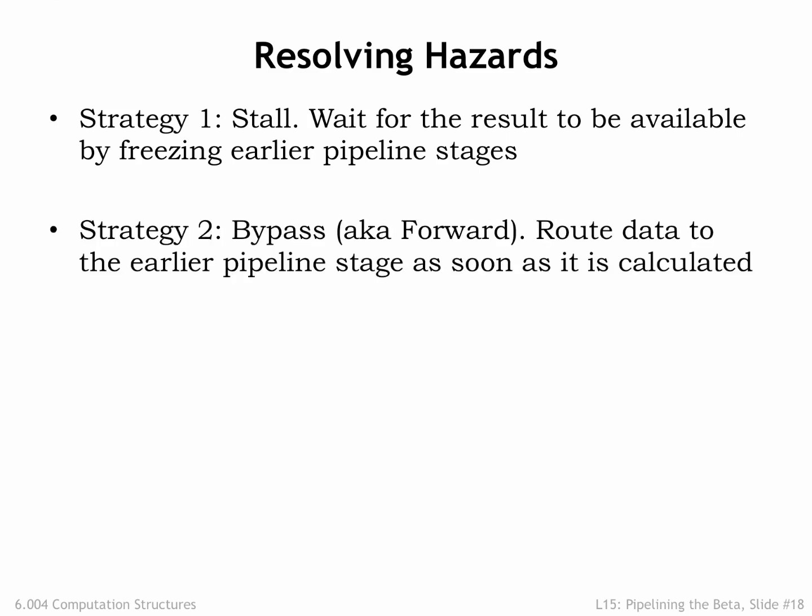The second strategy is to route the needed value to earlier pipeline stages as soon as it's computed. This is called bypassing, or forwarding. The value we need often exists somewhere in the pipeline data path — it just hasn't been written yet to the register file. If the value exists and can be forwarded to where it's needed, we won't need to stall. We'll be able to use this strategy to avoid stalling on most types of data hazards.